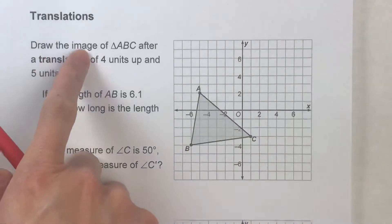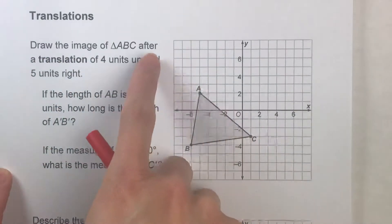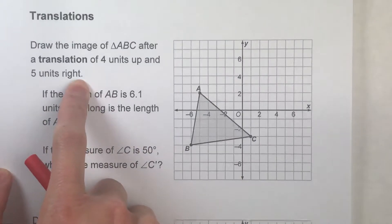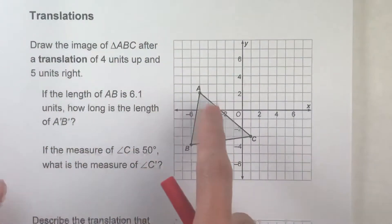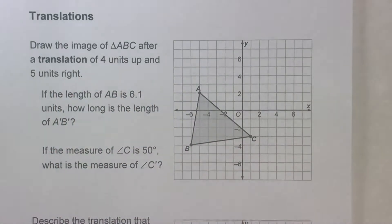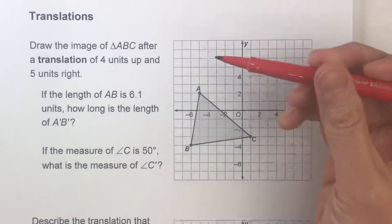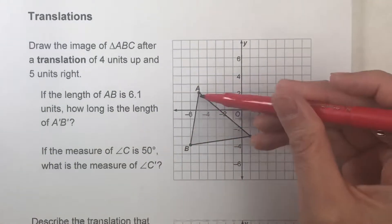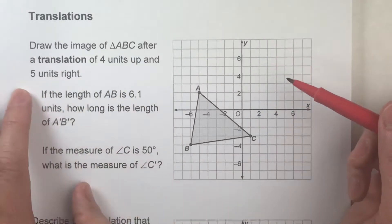For example, draw the image of triangle ABC after a translation of four units up and five units right. So what it's asking us to do is take this triangle and slide it four units up and five to the right. So to do that, all we're going to do is just take each of the corners of the triangle, the vertices, and move them four up and five right.